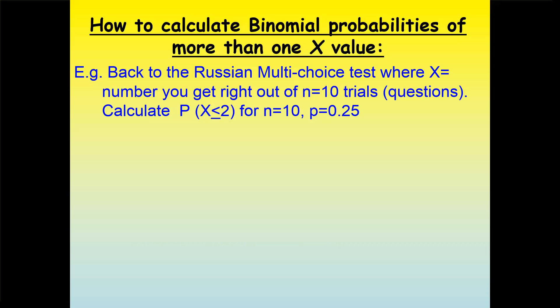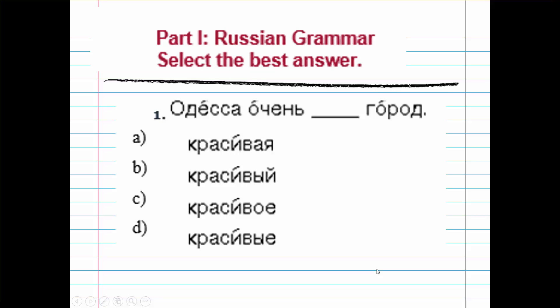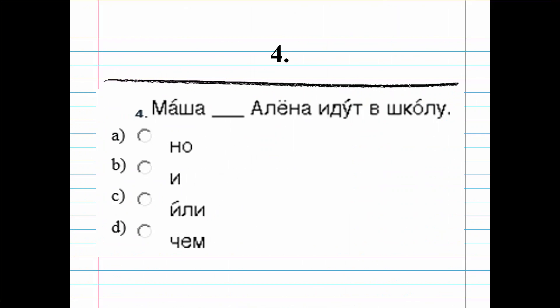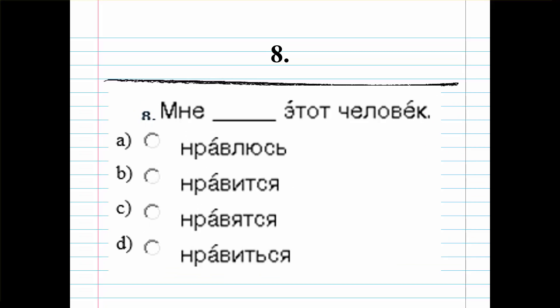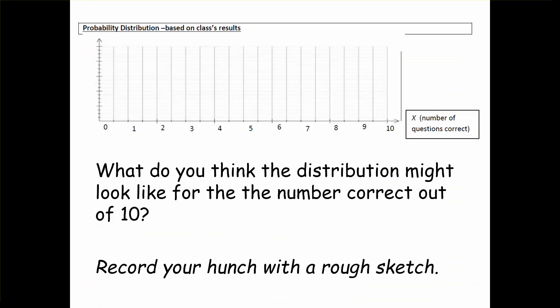The example we're using is a Russian multiple-choice test where you had ten questions all in Russian, and if you don't speak Russian you were guessing. Each question had four possible answers, one of which was correct. You had to select randomly A, B, C or D, so you had a one in four chance of getting each question right and a three in four chance, or 0.75, of getting each question wrong. The binomial distribution would be used to look at the probability of getting a certain number of questions correct out of ten.